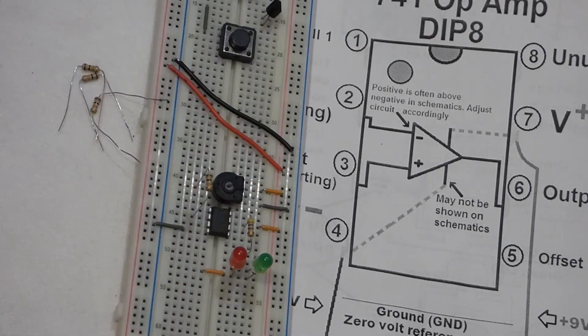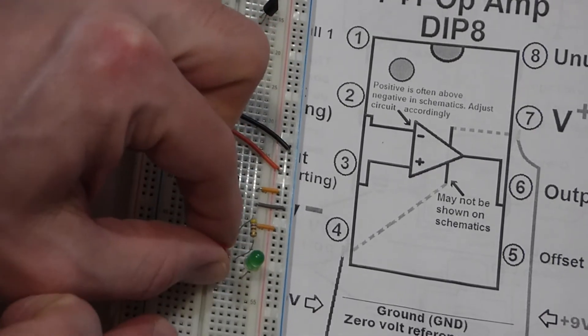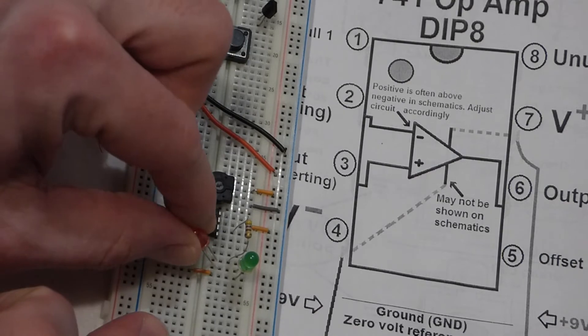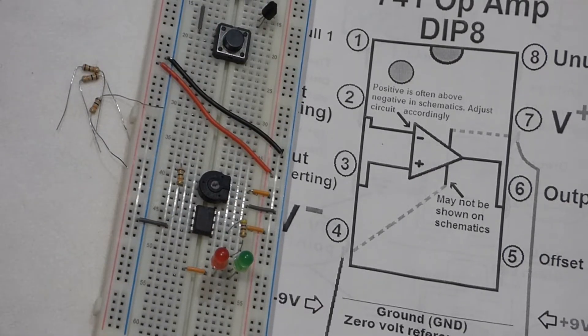You can also set the circuit up where if you just want the LED to turn on or off, you just take out the other LED. If you just want a green LED that either turns on or off, you just remove the red one, but this helps you see what the output is a little bit better.